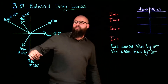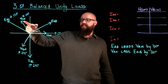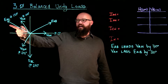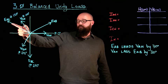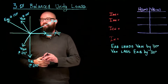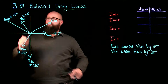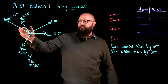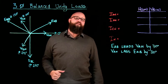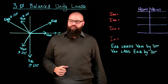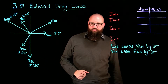For example, if I look at V C to N, I can see that V C to N lags E C to A by 30 degrees, and I can also say that E C to A leads V C to N by 30 degrees. Same thing with our B phase and B line voltage as well.